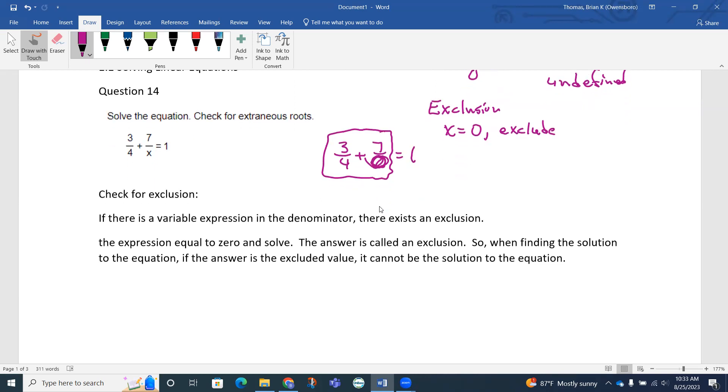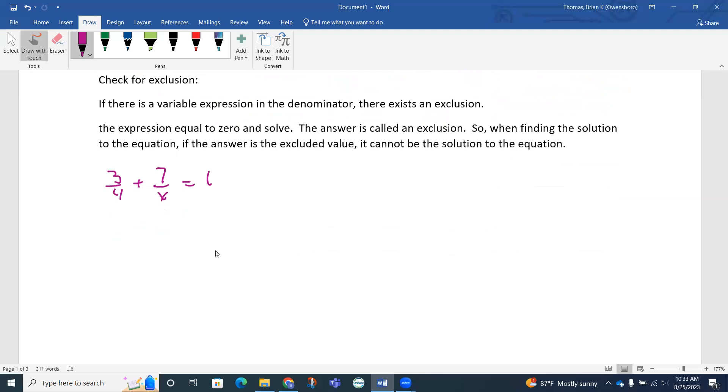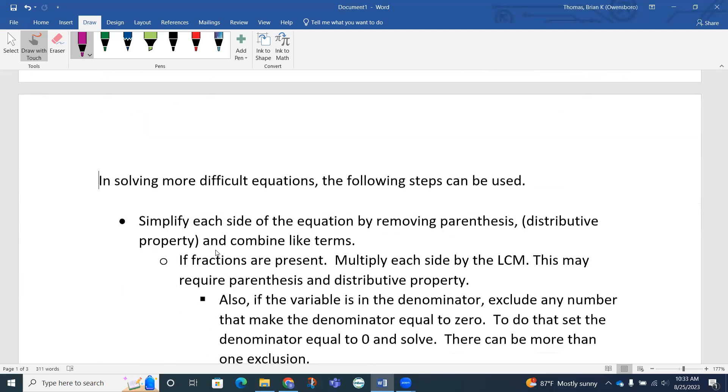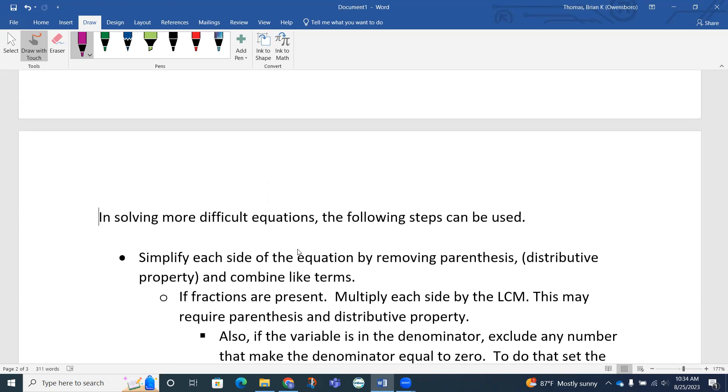Now that we've talked about that, let's actually approach solving the equation. This 3 fourths plus 7 over x equals 1. The strategy is, if we look at this checklist, this looks like a pretty difficult equation. What we want to do is simplify each side of the equation by removing parentheses, distributive property, and combine like terms. If fractions are present, multiply each side by the LCM. This may require parentheses and distributive property. This is where we are: fractions are present.